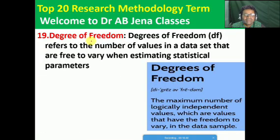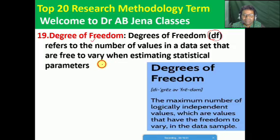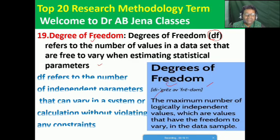Next, what is the meaning of degree of freedom? Degree of freedom, short form DF, refers to the number of values in a data set that are free to vary when estimating statistical parameters. Degree of freedom also refers to the number of independent parameters that can vary in a system or calculation without violating any constraint.